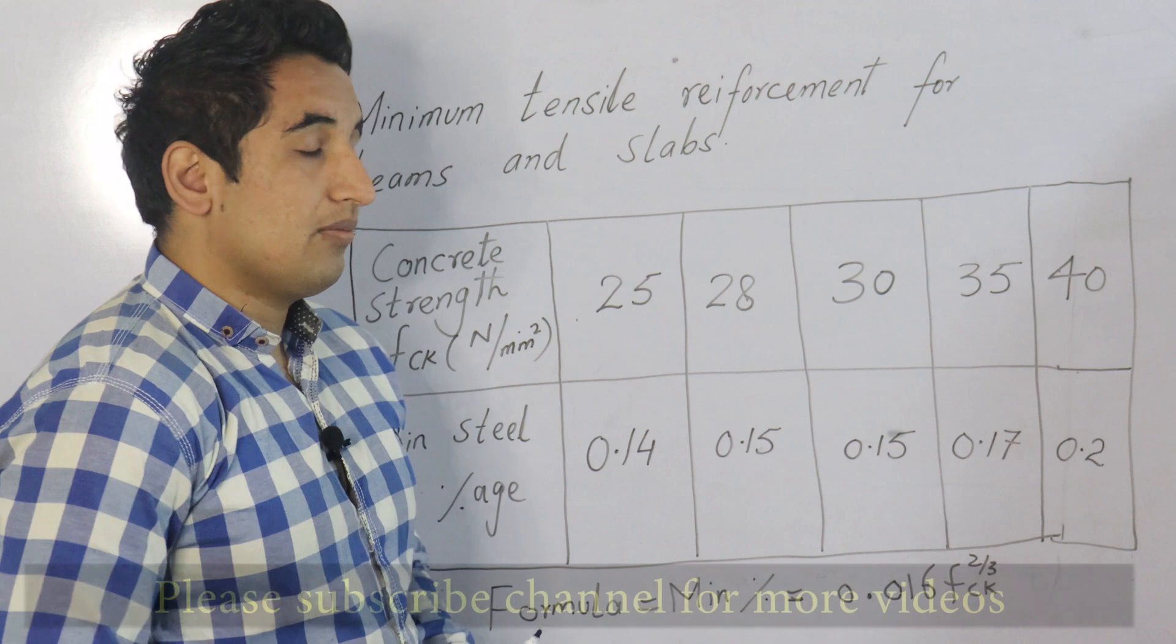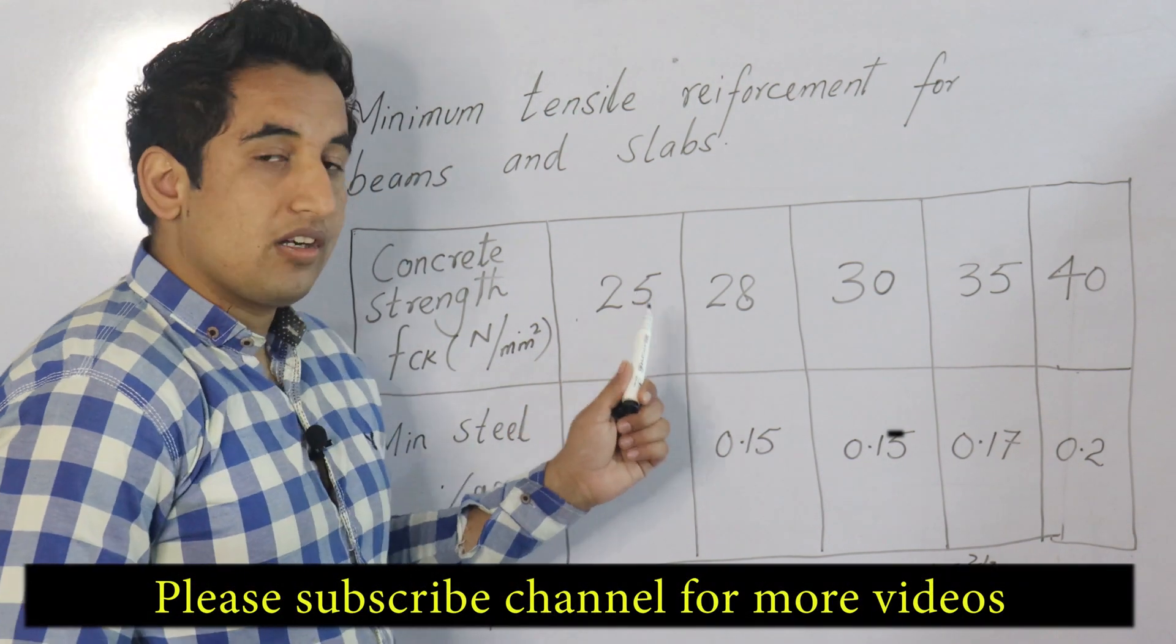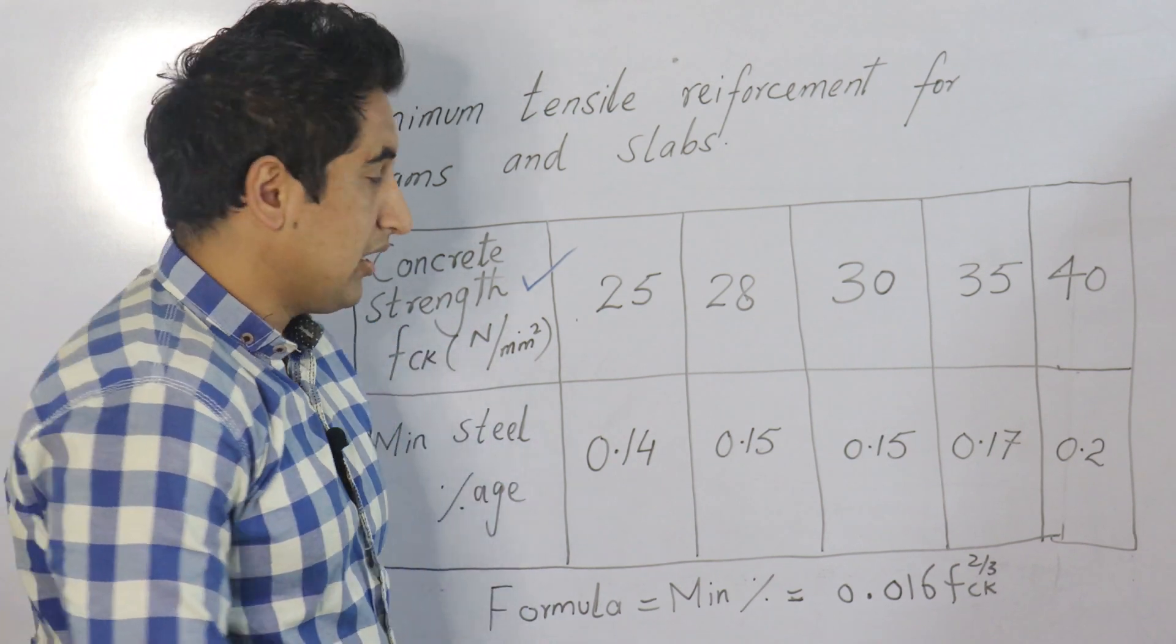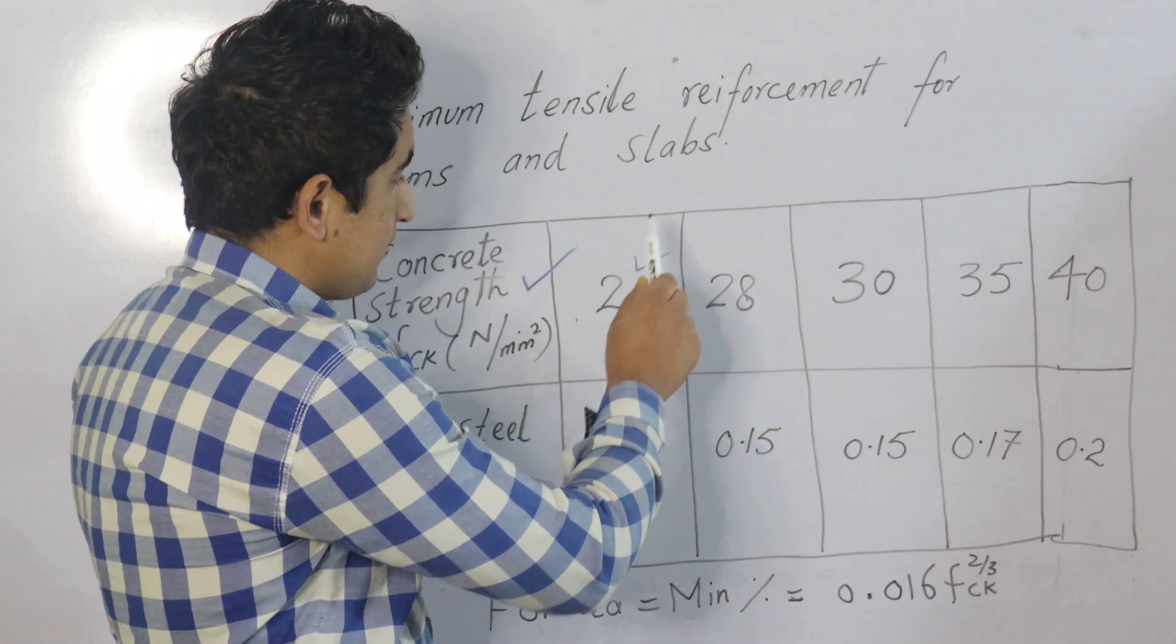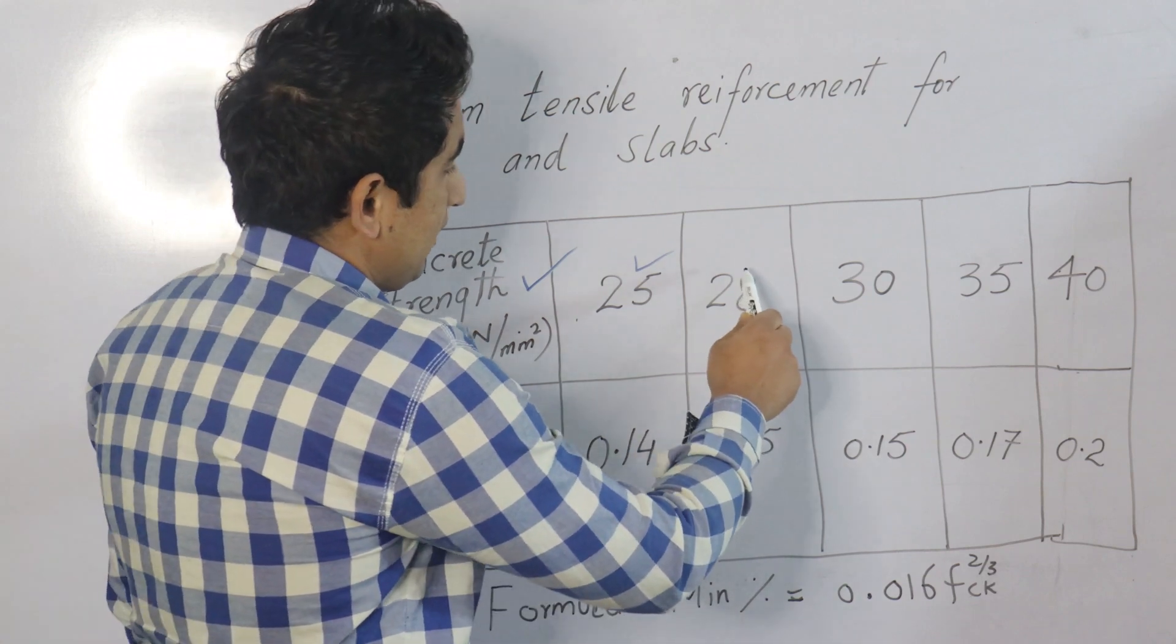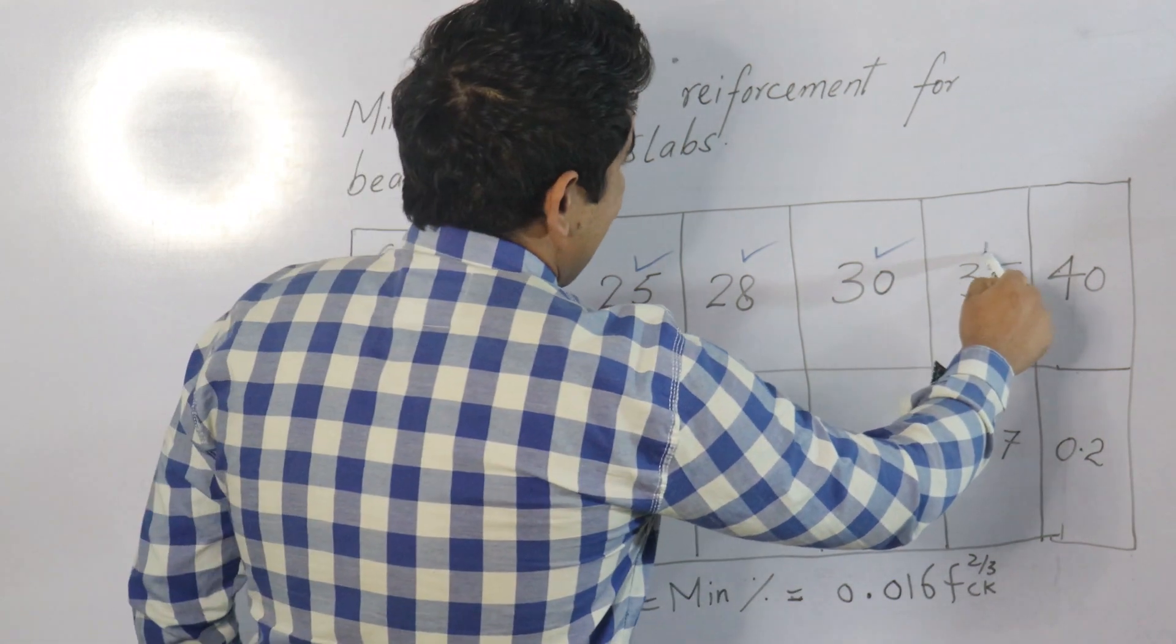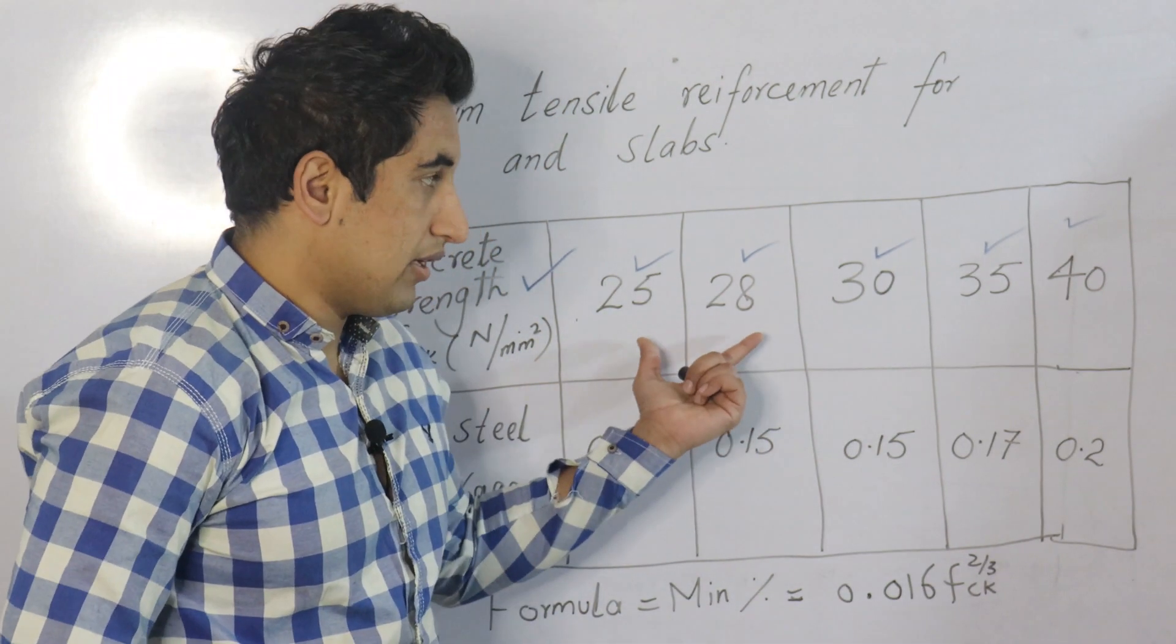We have a very simple formula, and before going into that I'm just going to tell you the different grades of concrete. In this row I have mentioned some of the grades of concrete in megapascals: 25 megapascals or you can say 28 grade of concrete, here it comes 30 grade of concrete, and next is 35 and 40 grades of concrete. These are different grades of concrete.